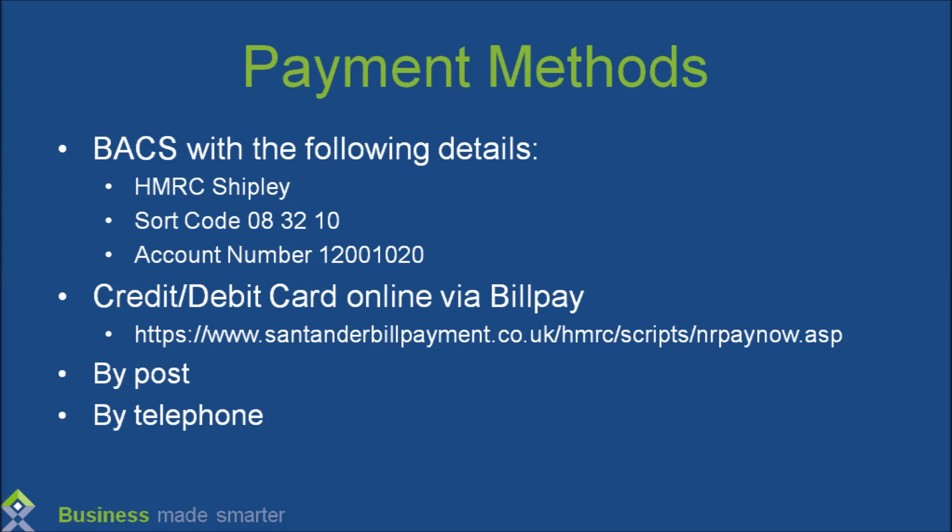You can pay your corporation tax to HMRC via the options on screen, which includes BACS, credit card, debit card, by post, or by telephone. You will need to use the 17-character corporation tax payment reference for the accounting period you are paying for.